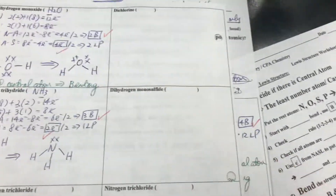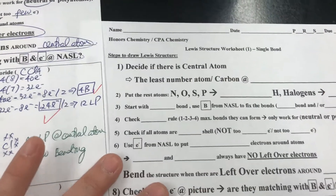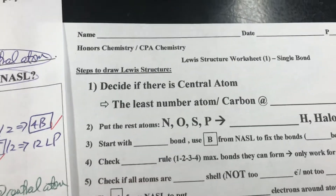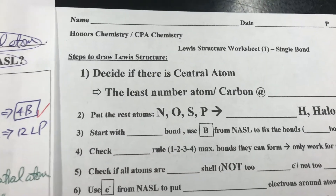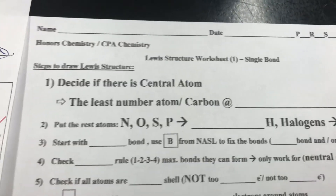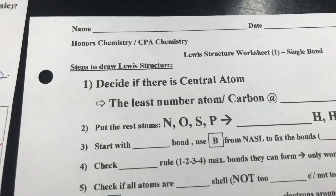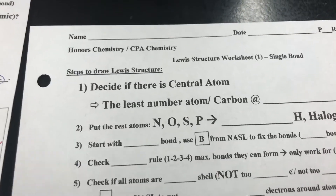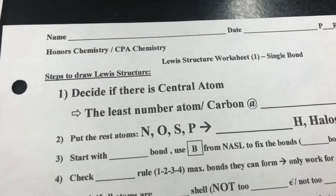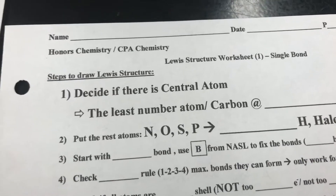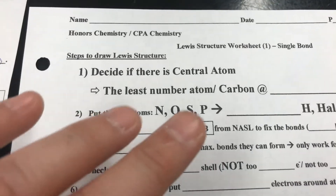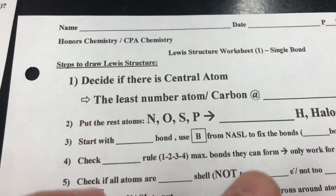In this video, I'm going to talk about the Lewis structure worksheet — single bond. From the last NASL worksheet, you need to know how to calculate the NASL, then find the bonds and find the leftover electrons. We're going to use that information to draw a Lewis structure.